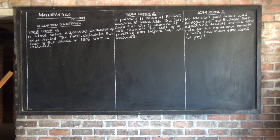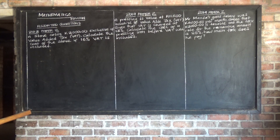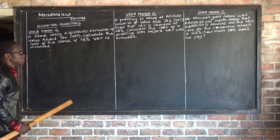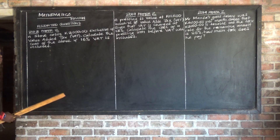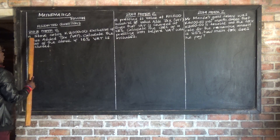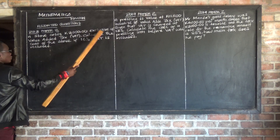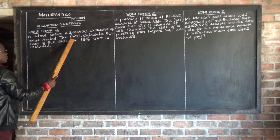Let's look at 2018 Paper 2. We are doing assorted questions live. We have a question on social and commercial arithmetic. It says a stove costs 3,000 exclusive of value added tax.